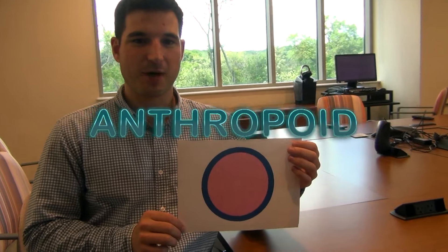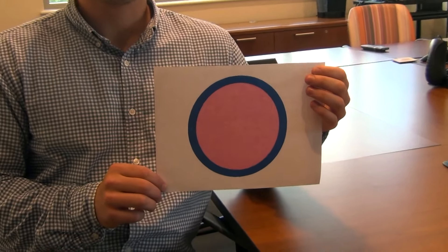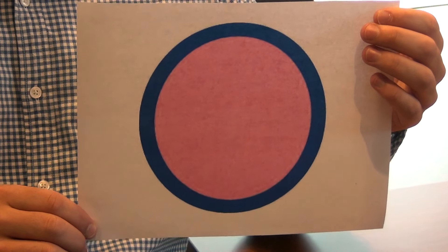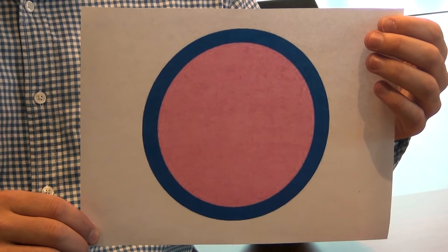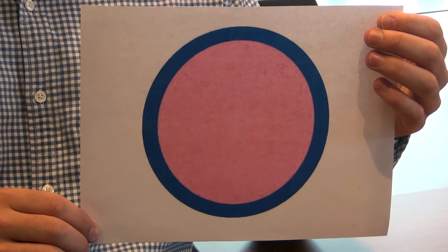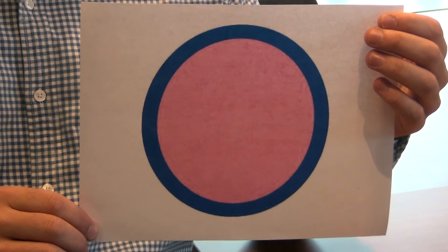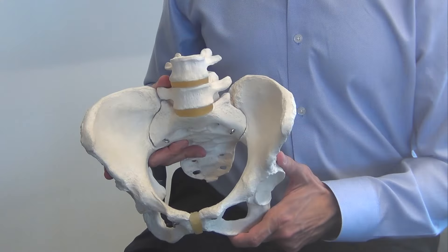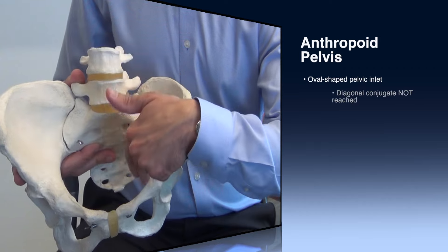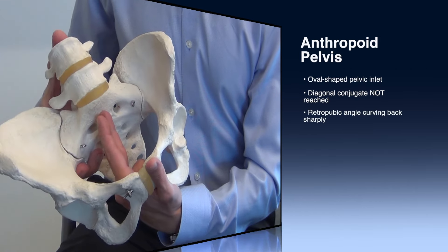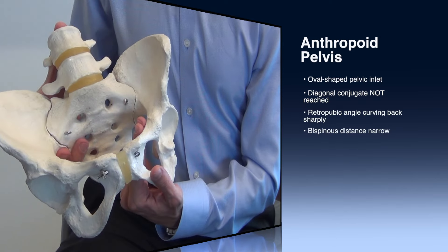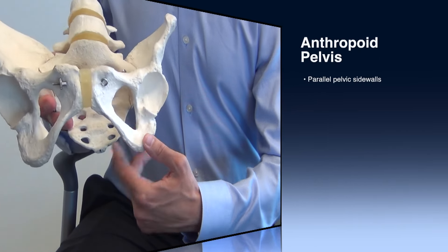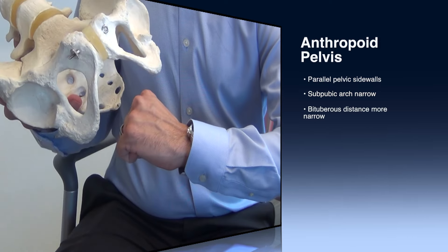The anthropoid pelvic type is found in approximately 20% of women. The anterior-posterior diameter is much wider than the transverse diameter. The fetal head often can only engage the pelvic inlet in the occiput posterior position and usually does not rotate. The spacious posterior pelvis accommodates the OP fetal head, and these infants can often be delivered easily from the OP position. On clinical pelvimetry, the pelvic inlet is oval-shaped, with the diagonal conjugate not reached and the retropubic angle curving back sharply. The bispinous distance is narrow but the pelvic sidewalls are parallel, the subpubic arch is less than 90 degrees, and the bituberous distance is more narrow.